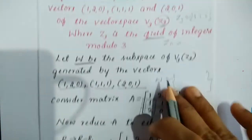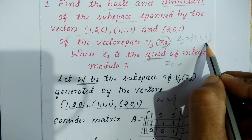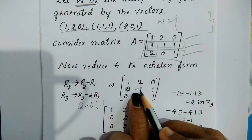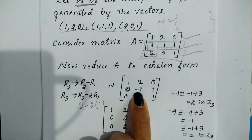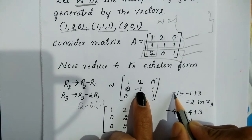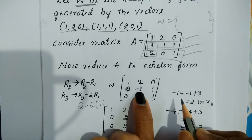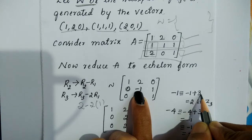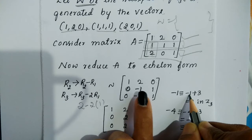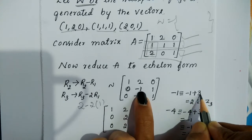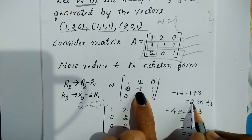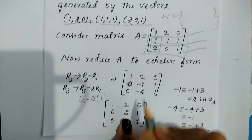Now, −1 is not an element of Z3. The elements of Z3 are 0, 1, and 2 only. So if we have negative values, add 3 to make the element belong to Z3. −1 + 3 = 2, which is clearly an element of Z3. Similarly, −4 is not in Z3; −4 + 3 = −1, still not in Z3, so add 3 again: −1 + 3 = 2. Therefore, −1 becomes 2 and −4 also becomes 2. So row 2 becomes (0,2,1) and row 3 becomes (0,2,1).